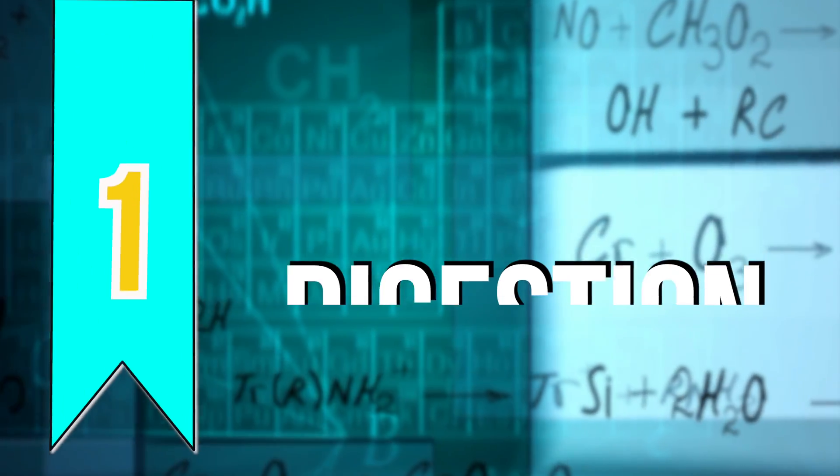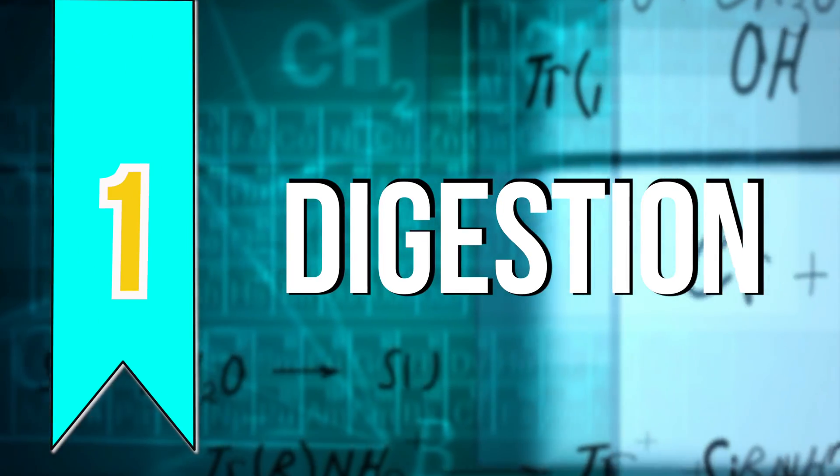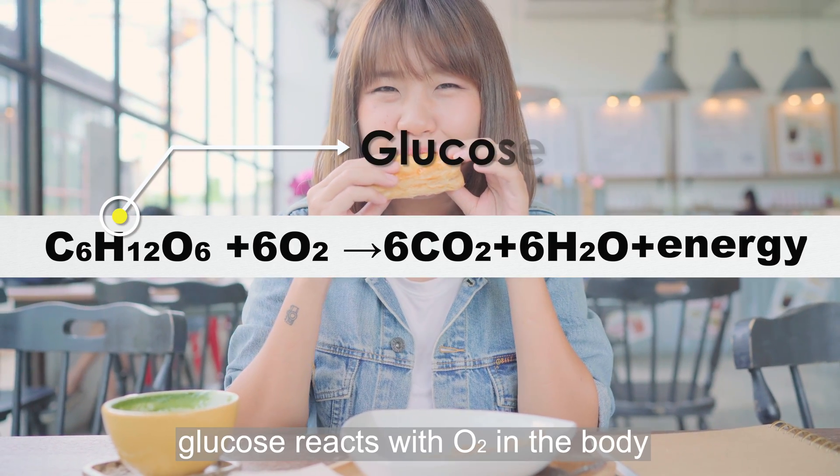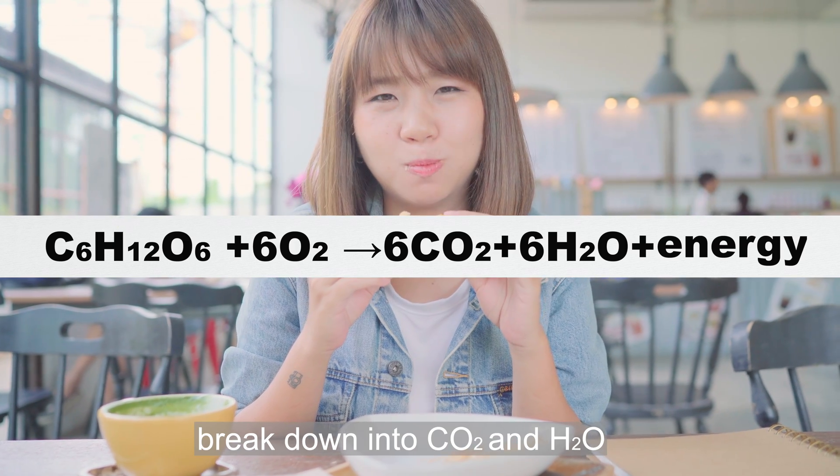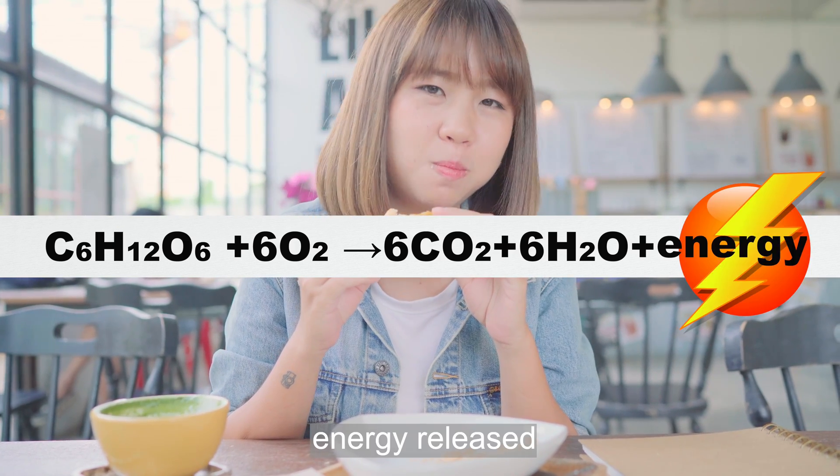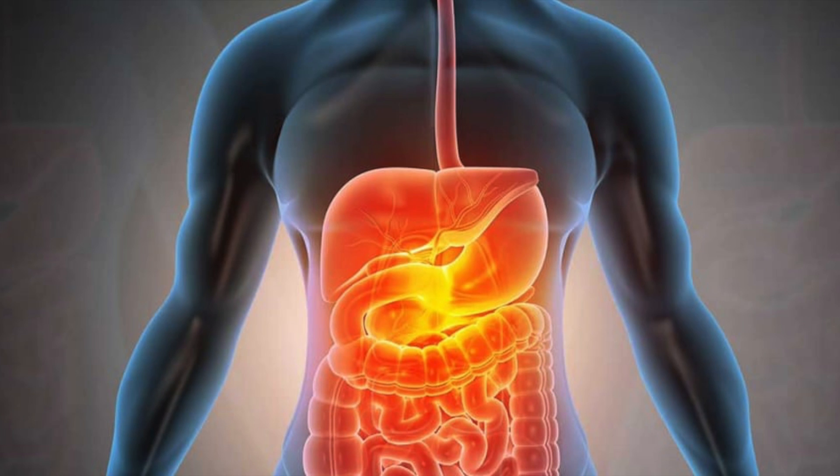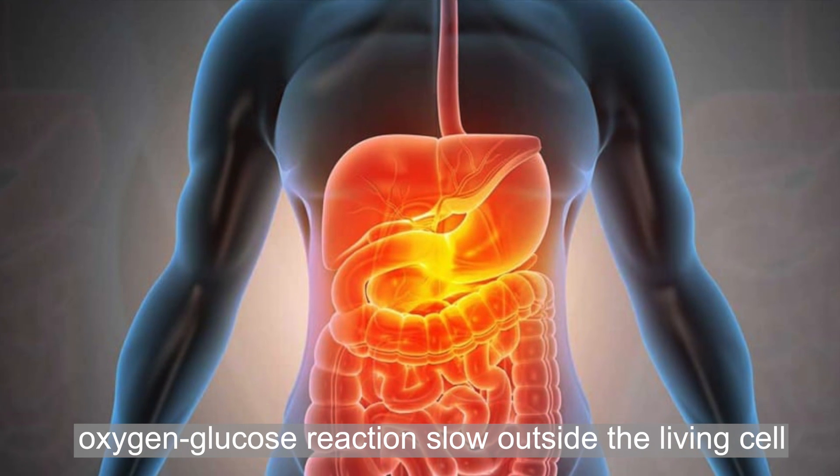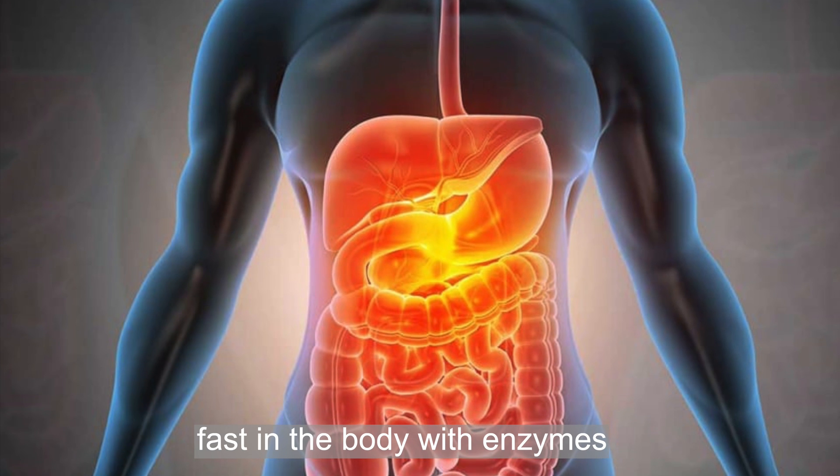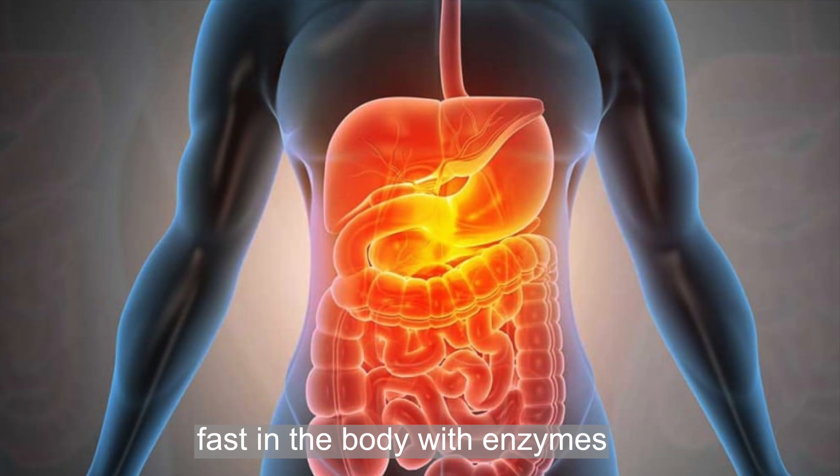Number one, digestion. Digestion? Who would have thought? Well, food molecules such as glucose, for example, react with oxygen in the body and break down into carbon dioxide and water. Energy is released in this process, which keeps us alive and grow. This oxygen glucose reaction is slow at ambient temperatures outside the living cell, but it happens fast in the body with the help of enzymes.